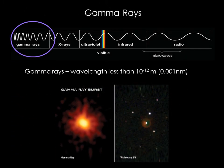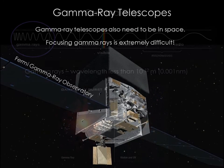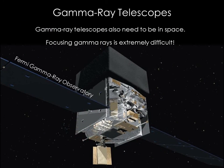Gamma rays have the smallest wavelengths and the most energy of any wave in the electromagnetic spectrum. They are produced by the hottest and most energetic objects in the universe. Gamma rays are even more difficult than X-rays to focus. It takes a really massive detector to capture gamma ray photons. For example, the Large Area Telescope on the Fermi Gamma Ray Observatory weighs 3 tons.